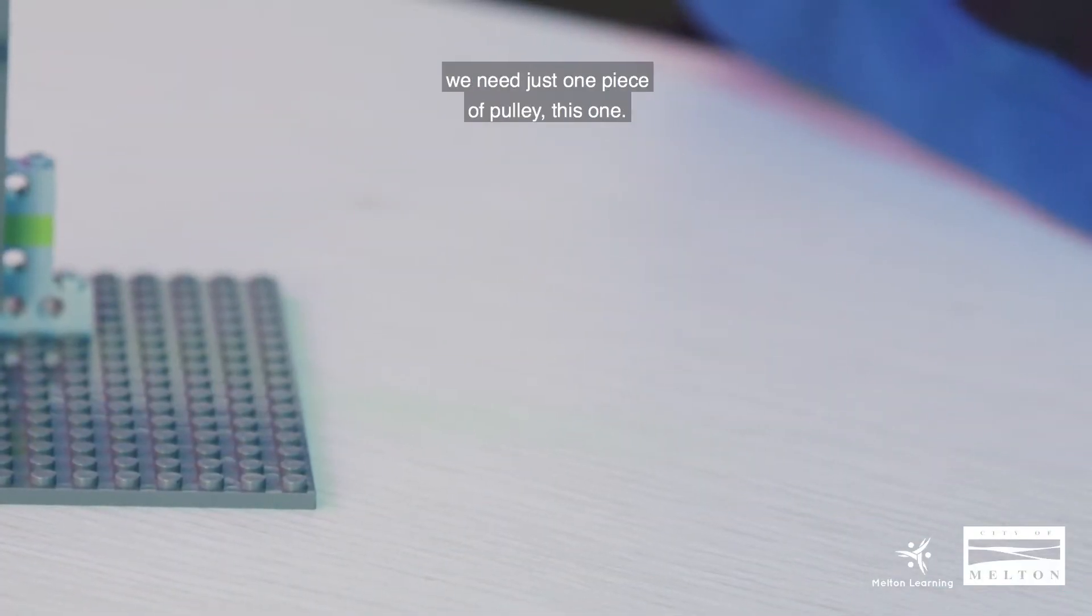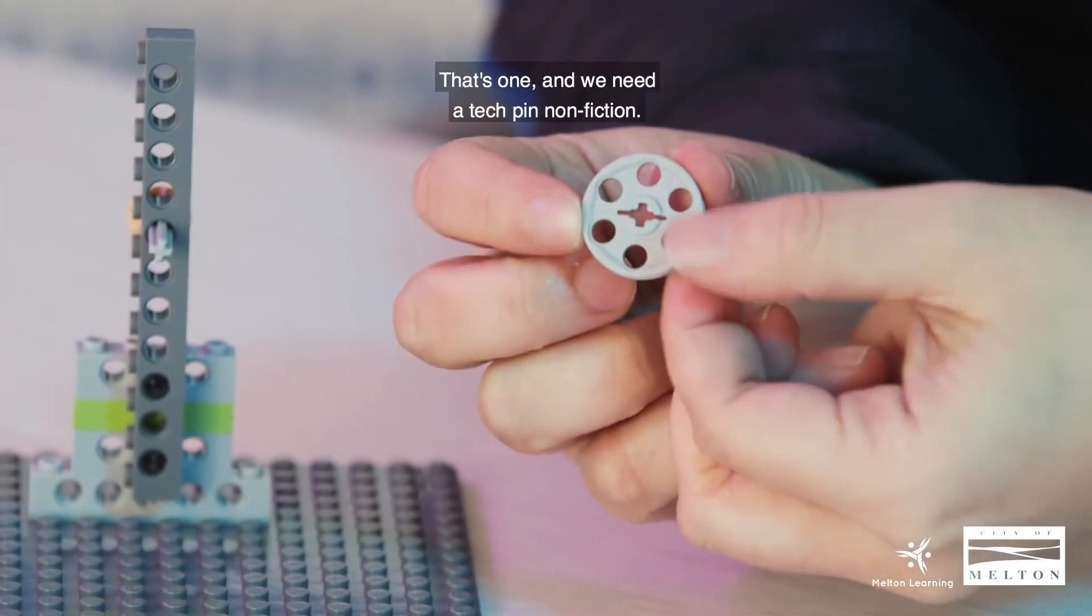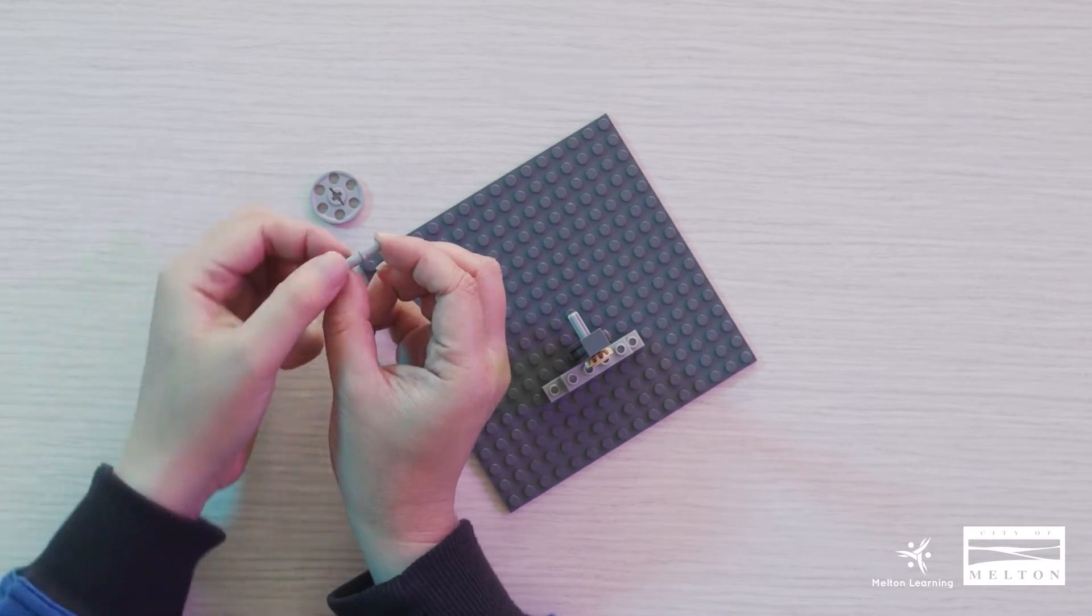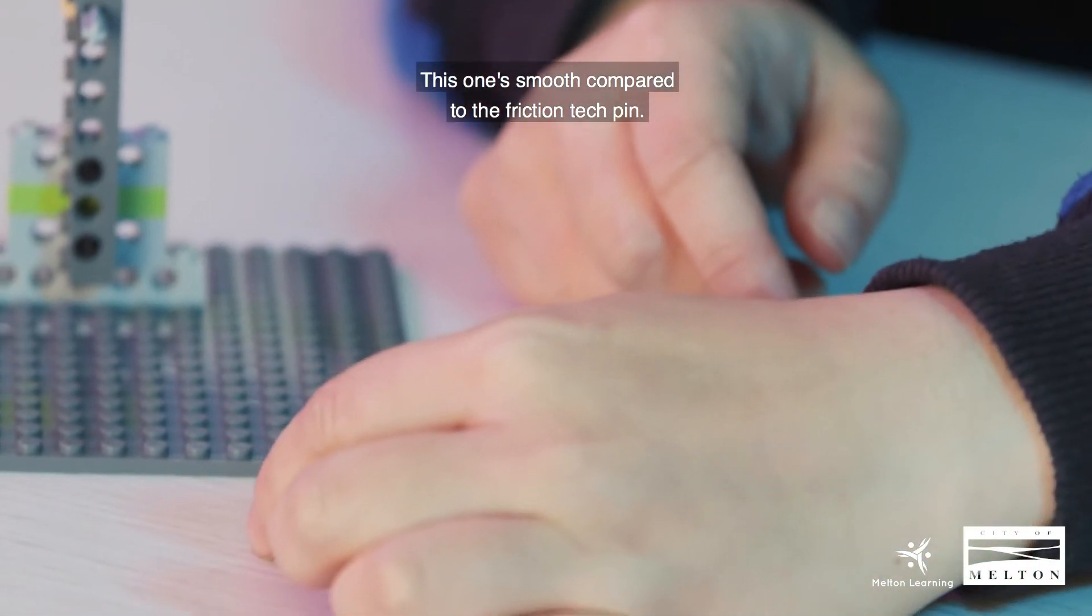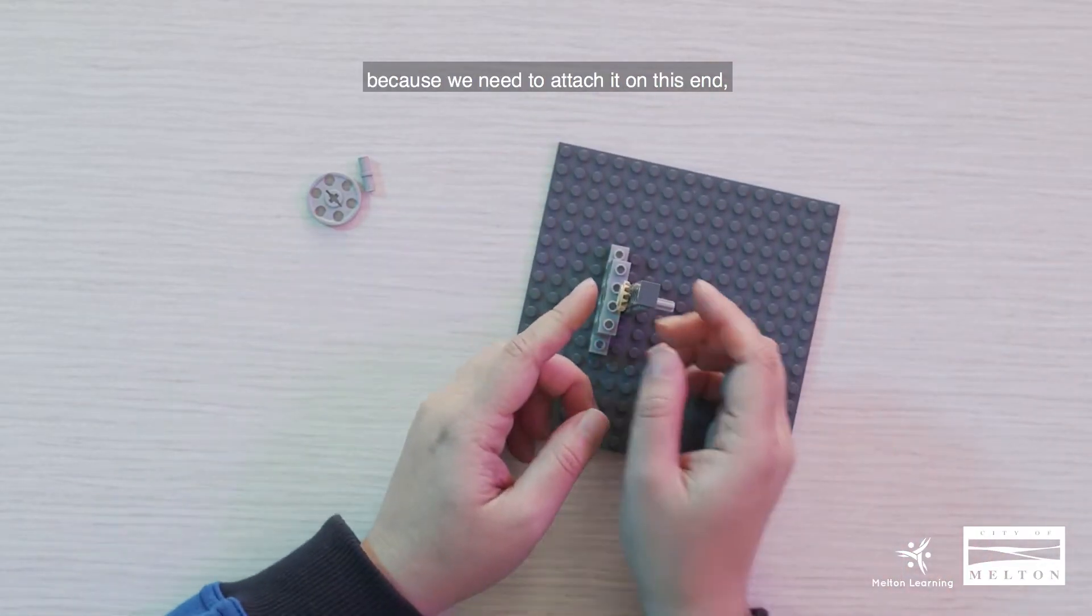Step number seven, we need just one piece of pulley, this one. And we need a tech pin non-friction. This one's smooth compared to the friction tech pin.